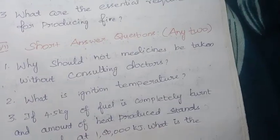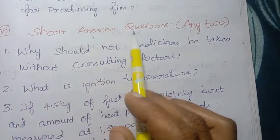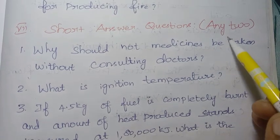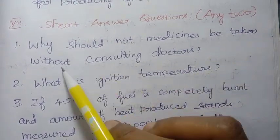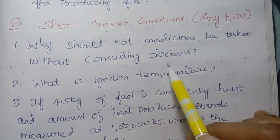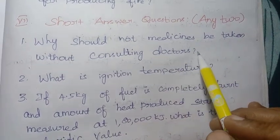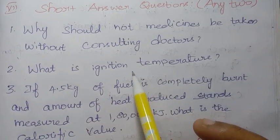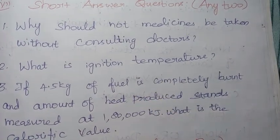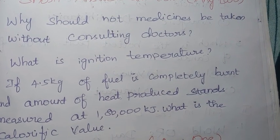Moving to roman numeral seven: short answer questions, any two. Three questions are given. Why should medicines not be taken without consulting a doctor? Second: what is ignition temperature? Ignition temperature is the minimum temperature at which something ignites.